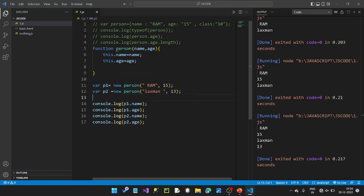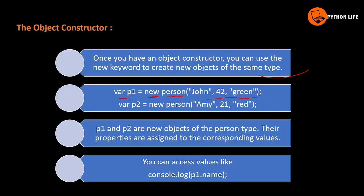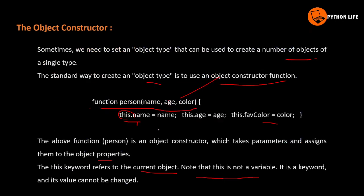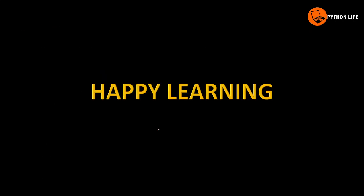When we create multiple objects, we can easily access them. The objects are created separately but using the same constructor. In the next class, we will cover methods — creating and using methods in objects. Happy learning, thank you.